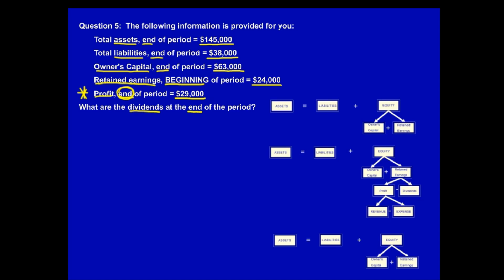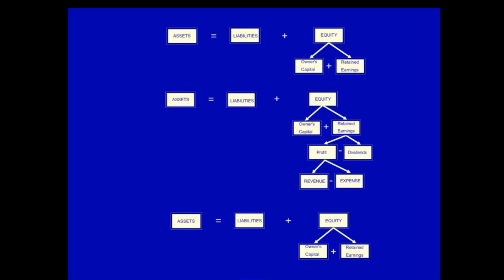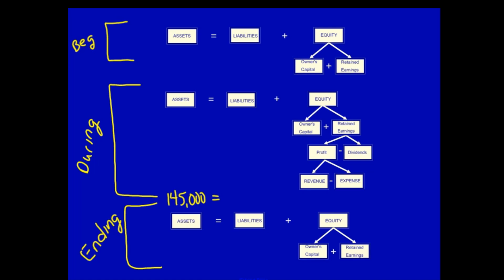Here again, we have one equation for the beginning, one equation for during, and one equation for the end. Let's fill in our knowns. Assets end of period: $145,000. Liabilities end of period: $38,000. Owners capital end of period: $63,000. Retained earnings beginning of period: $24,000. Profit for the period: $29,000. We have no information about revenues or expenses during the period, so we can ignore these.